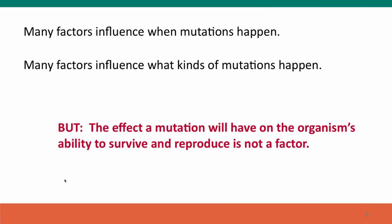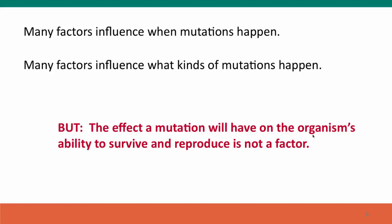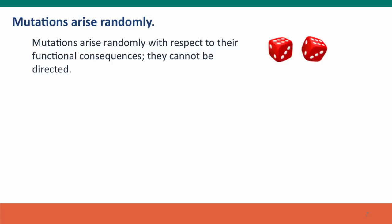Many factors influence when mutations happen, and many factors influence what kinds of mutations happen. But one thing that doesn't influence when or what kind of mutations happen is the effect that the mutation will have on the organism's ability to survive and reproduce. The effect on the organism's fitness is not a factor in determining what kinds of mutations happen. Mutations happen by chance, and natural selection selects from among those mutations. Mutations arise randomly with respect to their functional consequences — they can't be directed. The cell has no way to do this.